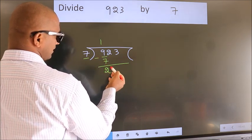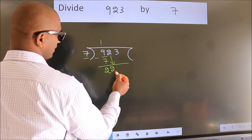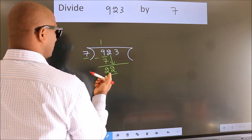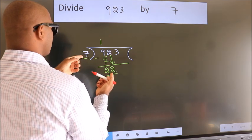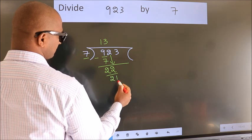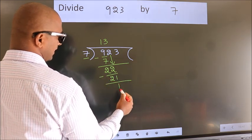After this, bring down the beside number. 2 down, so 22. A number close to 22 in the 7 table is 7 threes, 21. Now we subtract. We get 1.